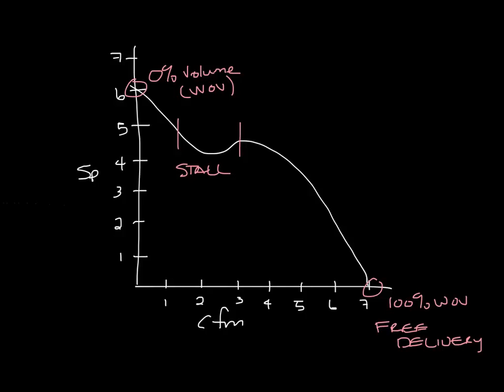Okay next let's draw in the system curve. The system curve shows how your system will operate based on the resistance of the system. If the system had more resistance the curve may be over here, or if it had less it may be over here.